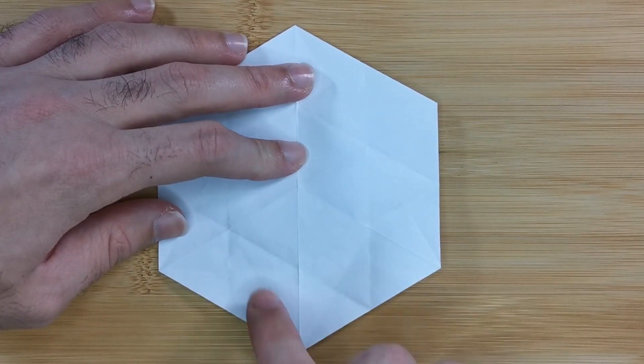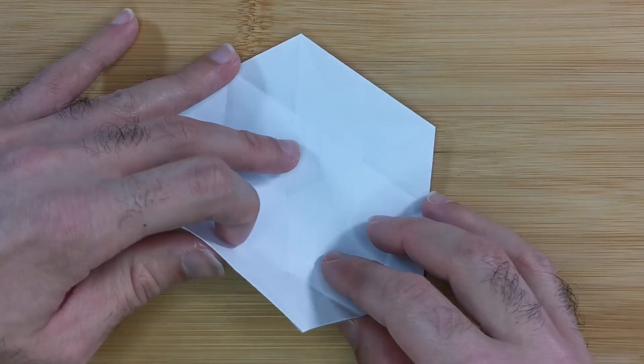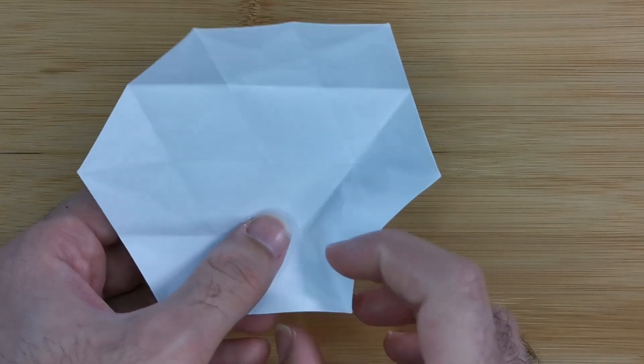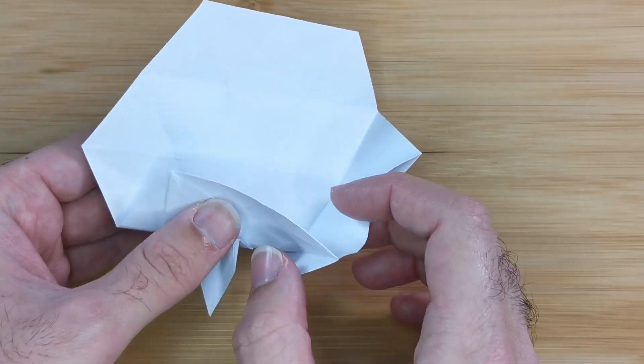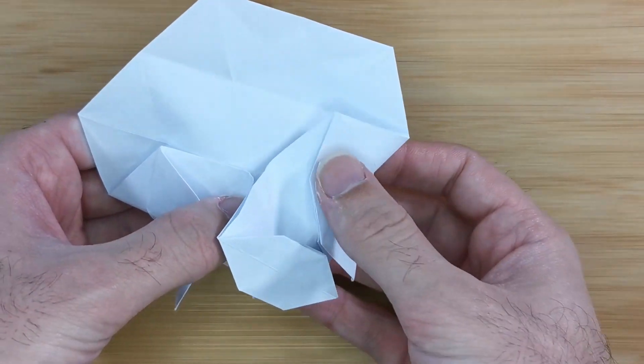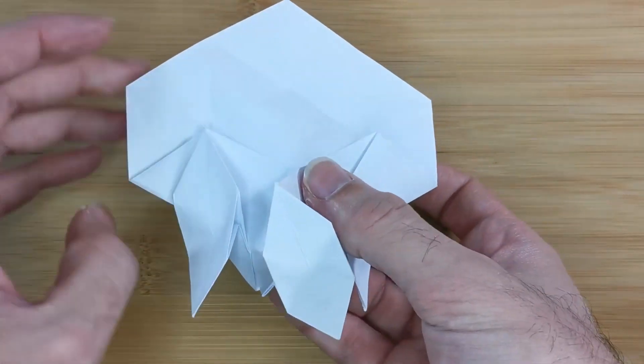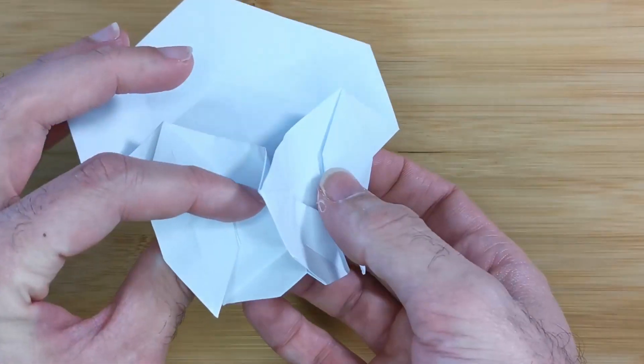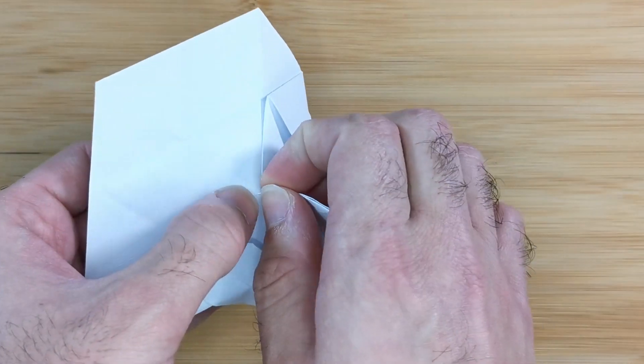And now we're going to fold along two of the creases we just made at the same time. It might help to bring the model off the table like this. Make sure not to make any new creases especially through the branches. Make sure it's nice and neat at the center.